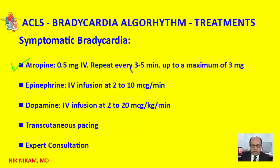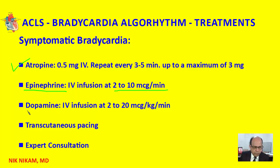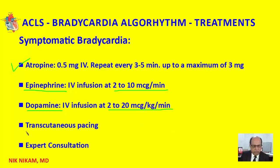If the patient is hypotensive, remember that atropine does not address hypotension. So along with atropine we can start these patients on epinephrine IV infusion at a dose ranging from 2 to 10 micrograms per minute, or we can use dopamine at a rate of 2 to 20 micrograms per kilogram per minute.